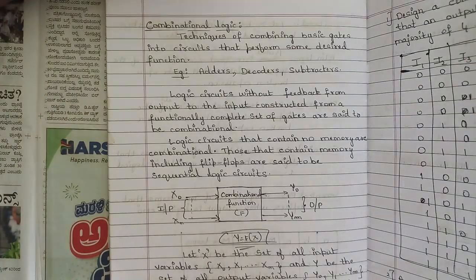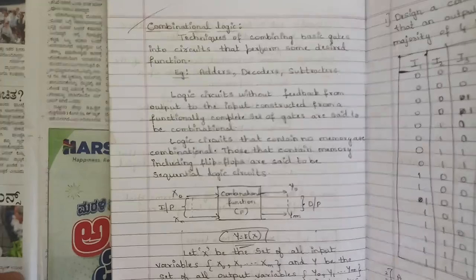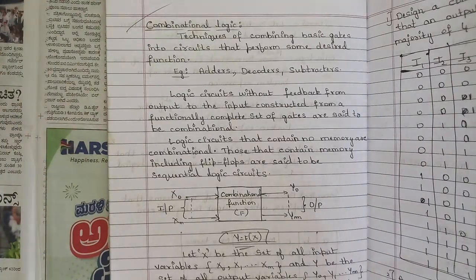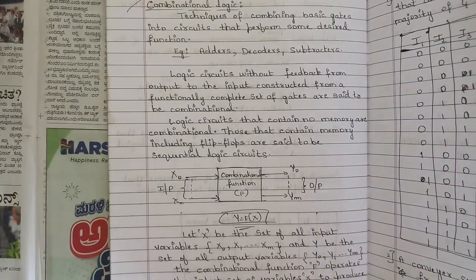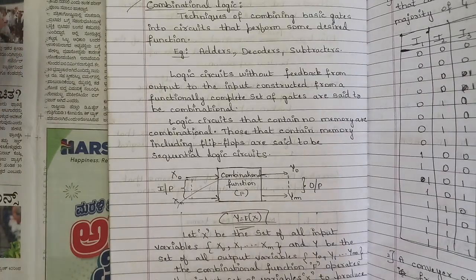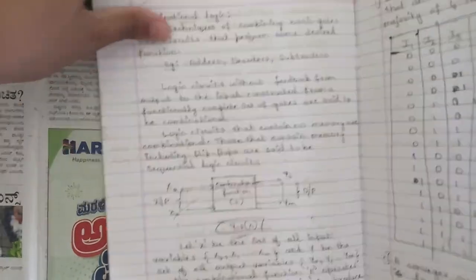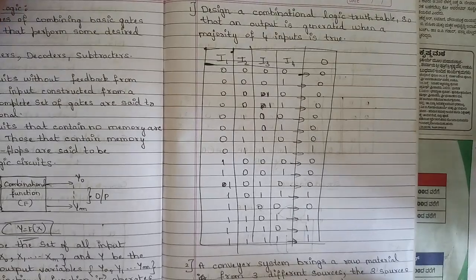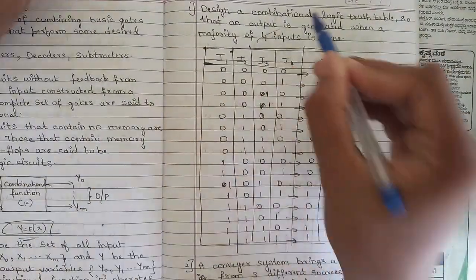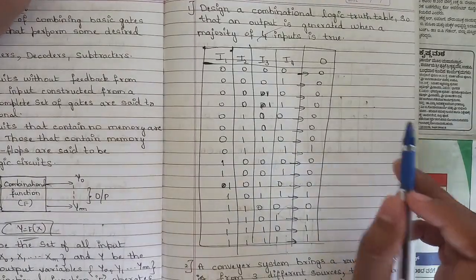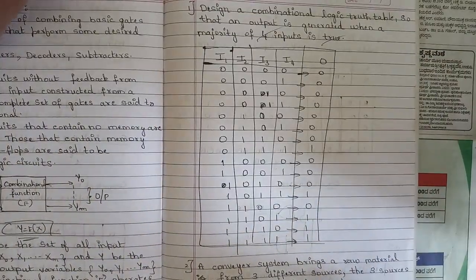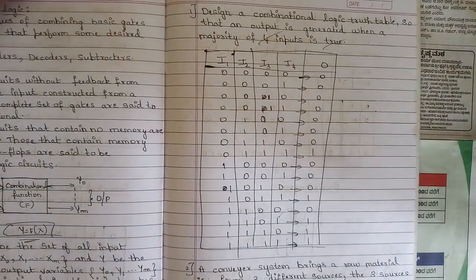The first important topic is related to combinational logic circuits — this is a very important and multiple-times repeated question. You need to know the definition of a combinational logic circuit, how it works. One question involves designing a combinational logic circuit with four inputs where the majority of the four inputs is true.